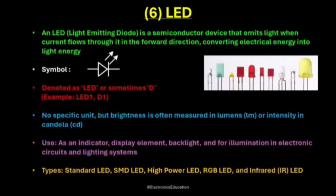Next, the most fascinating and widely used type of diode in modern electronics and displays is the LED, or light-emitting diode. An LED is a semiconductor device that emits light when current flows through it in the forward direction. It works by converting electrical energy into light energy. When electricity passes through an LED, it produces light instead of heat like a regular bulb — that's why LEDs are so efficient and long-lasting. The symbol of an LED is similar to a normal diode symbol, a triangle pointing toward a line, but with two small arrows pointing outward representing emitted light. LEDs are usually denoted as LED, or the letter D, followed by a number like LED1 or D1. Their brightness is often measured in lumens or candela.